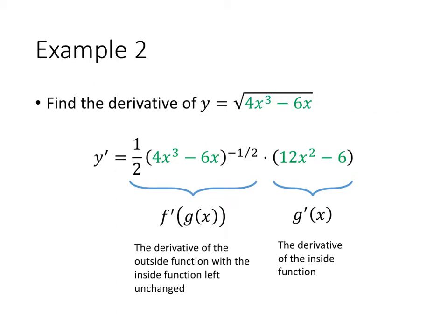So here's what our derivative looks like. Remember that the derivative of our outside function was (1/2)x^(-1/2). But we want to take that derivative and substitute in the original function. So it's not (1/2)x^(-1/2). It's (1/2) times my original function to the (-1/2). And then we multiply that by the derivative of the inside function.